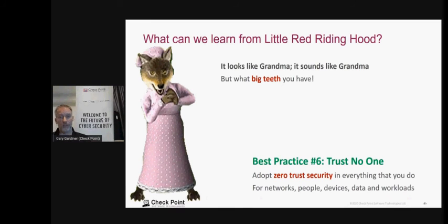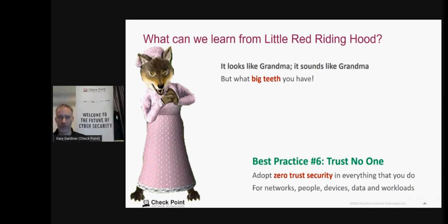A lot of organizations are implementing zero trust — a conversation I've been having for about a decade, though Forrester and Gartner took it to the next level two or three years ago. Organizations have zero trust inside their data center networks but not with their cloud. We need to look at networks, people, devices, data, and workloads to make sure they are secure and what they claim to be — and adopt a zero trust model across your private and public cloud.